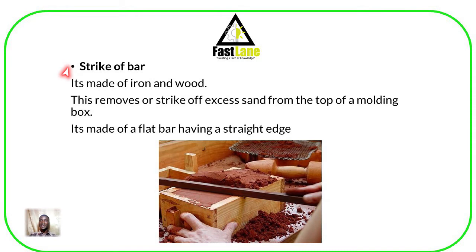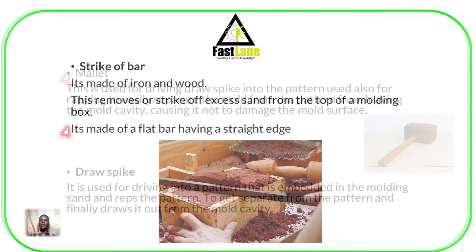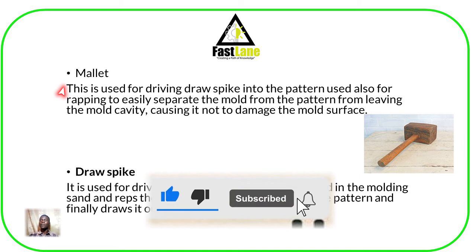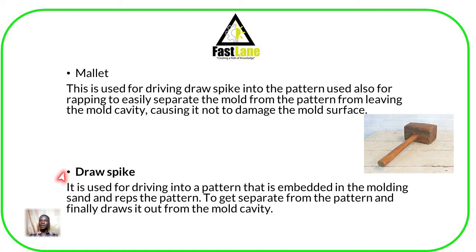Then we have what we call a strike-off bar. It is made of iron and wood and is used for removing or striking off excess sand from the top of the molding box. It is made of a flat bar having a straight edge. We also have a mallet, which is used for driving the draw spike into the pattern and for rapping to easily separate the mold from the pattern. Whenever we want to withdraw the pattern from the mold to create a mold cavity, we use the mallet together with the draw spike in order to remove the pattern leaving the mold cavity without damaging the surface.